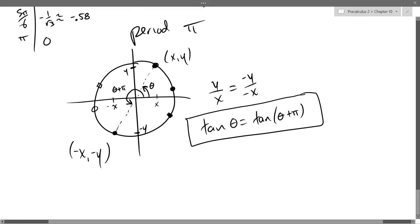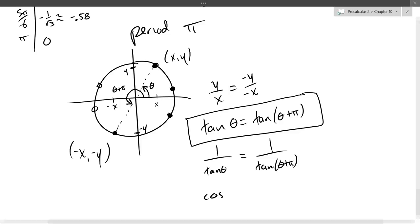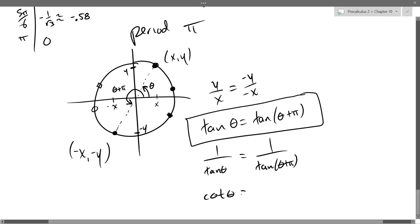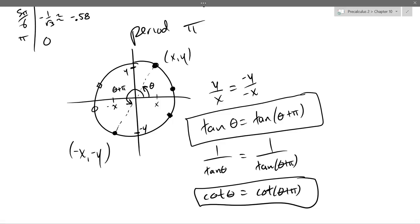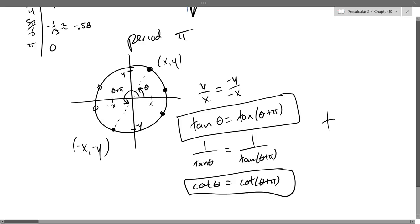Now if we do a tiny bit of algebra here, if I take the reciprocal of both sides or cross-divide, I'll get 1 over tan theta is 1 over tan theta plus pi. This is cotangent, so cotangent theta equals cotangent theta plus pi. A tiny little bit of algebra gives us the periodic property of cotangent also. So tangent and cotangent have period pi, not 2 pi. Most functions have 2 pi period, except for tangent and cotangent - they've got period pi.